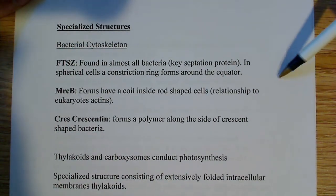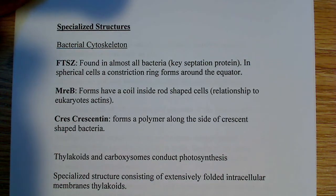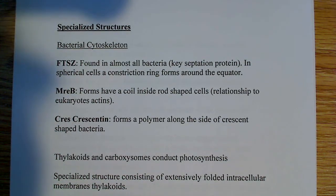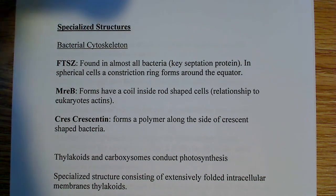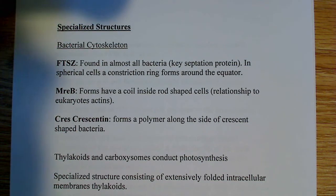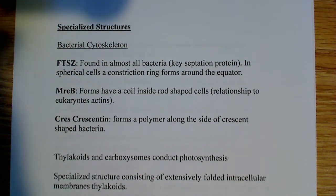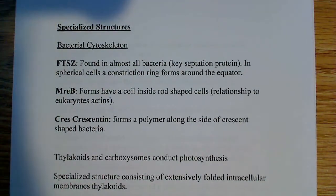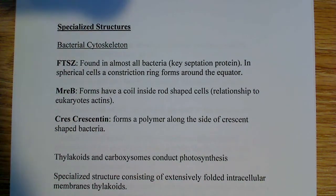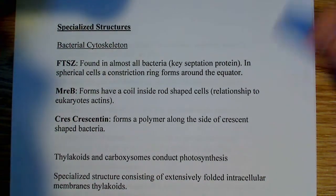The other one is MreB. MreB forms a coil inside of rod-shaped cells — you'll see this in bacilli — and it has a relationship to eukaryotic actins. It doesn't have actin, but it has some distant relationship; there are some similarities there.